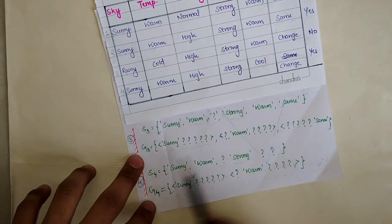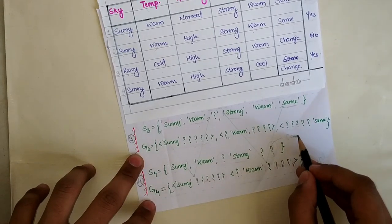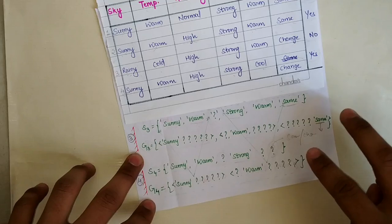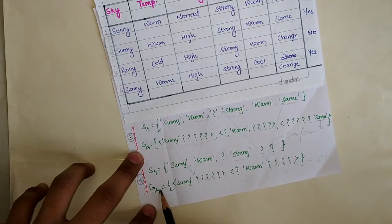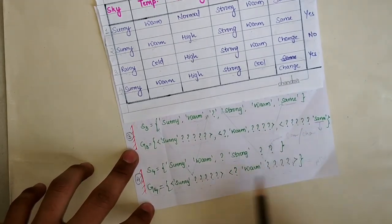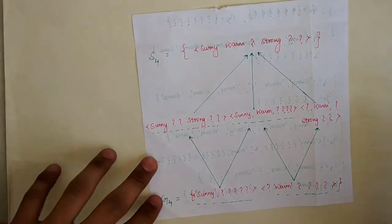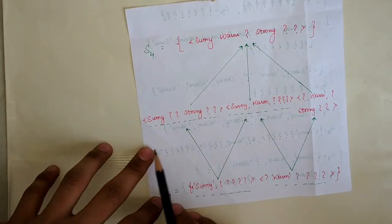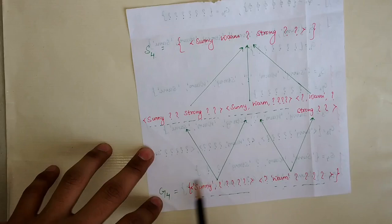Now observe: the specific hypothesis previously had 'same' but now has a question mark — meaning it can be either same or change. However, the general hypothesis has a constraint that it should always be 'same', creating a contradiction. Since the specific hypothesis changed, we remove that last pair from the general hypothesis. The final specific hypothesis is sunny, warm, question mark, strong, question mark, question mark. The version space — the set of hypotheses — includes entries like sunny-strong, sunny-warm, warm-strong, all derivable from the general hypothesis.